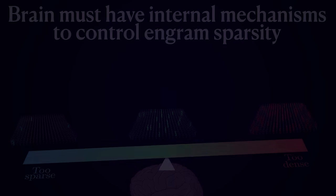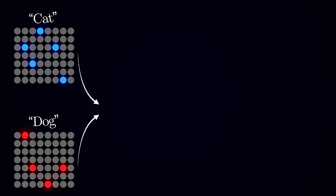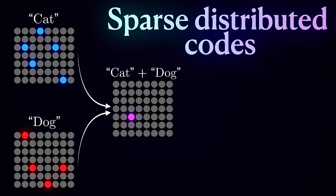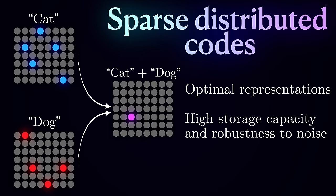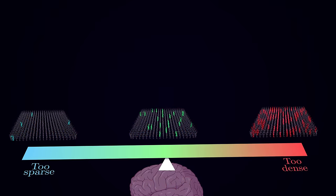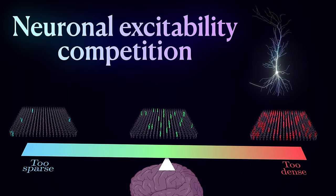But why is that? Well, there is a great amount of evidence that the brain implements a sparse distributed system for information coding and computations. These representations with non-overlapping codes seem to be optimal, having higher storage capacity and robustness to noise. So the sparsity of the engram is a defining characteristic that must be kept within reasonable bounds. One particular mechanism that ensures the constant engram size is the competition through neuronal excitability.